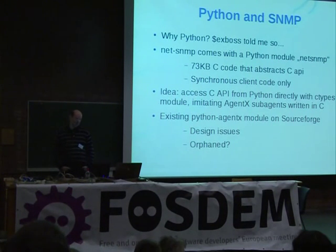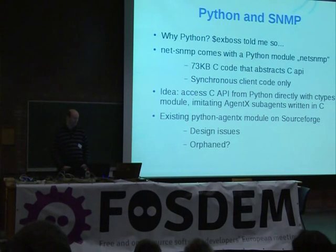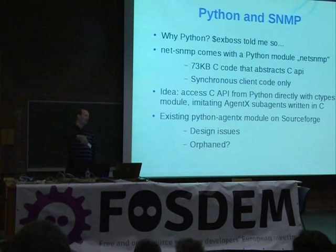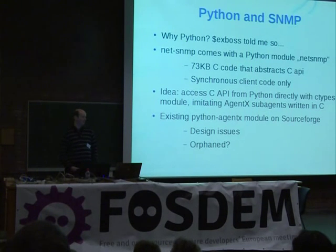NetSNMP comes with a Python module, netsnmp.doe. It's a quite large pile of C code that abstracts the whole C API into an object-oriented approach, but it's client code only. So if you want to write an agent, you're stuck.